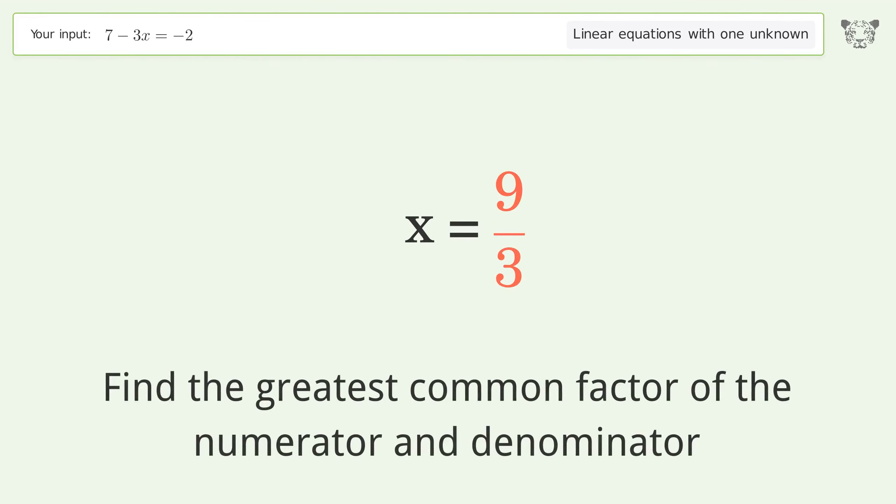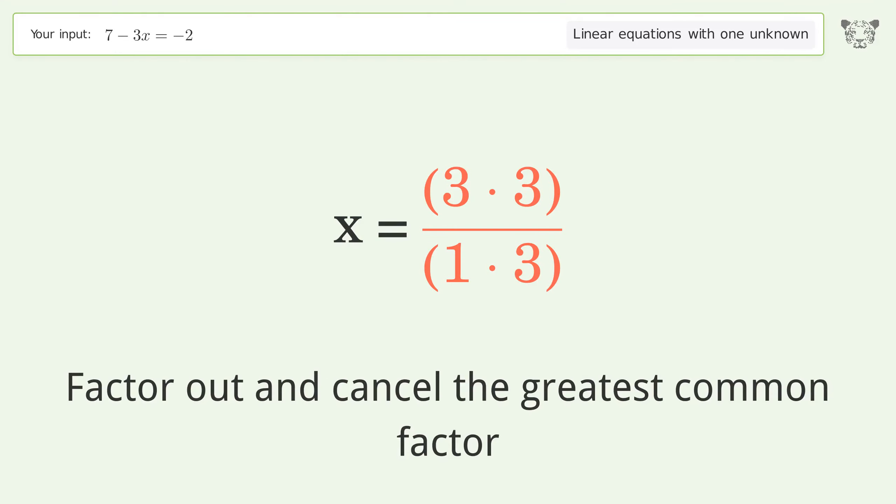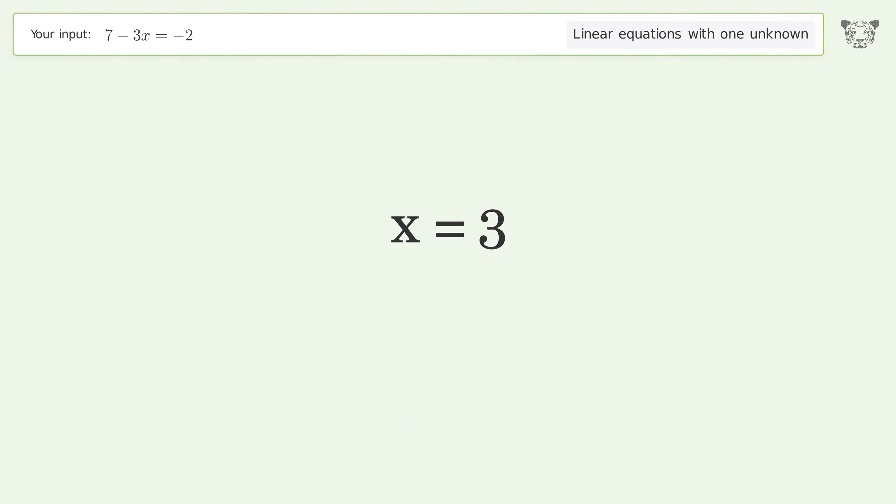Find the greatest common factor of the numerator and denominator. Factor out and cancel the greatest common factor. And so the final result is x equals 3.